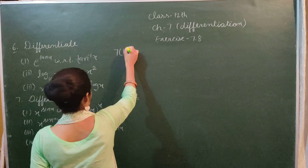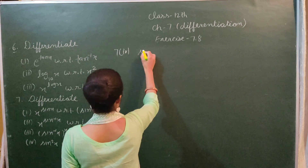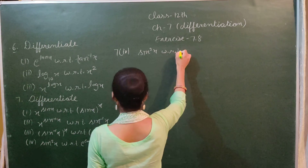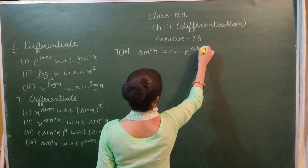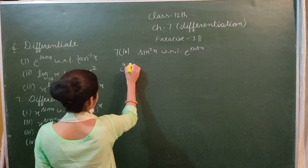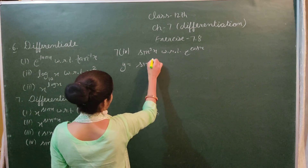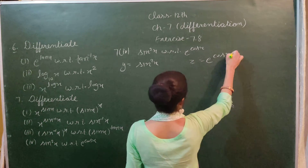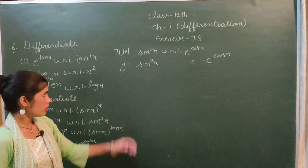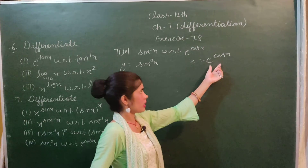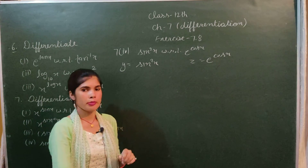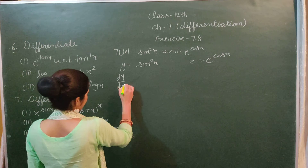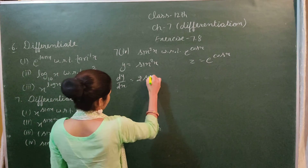In the fourth part of the seventh sum, we have to differentiate sin²x with respect to e^(cos x). We let y = sin²x and z = e^(cos x). We differentiate y with respect to x.